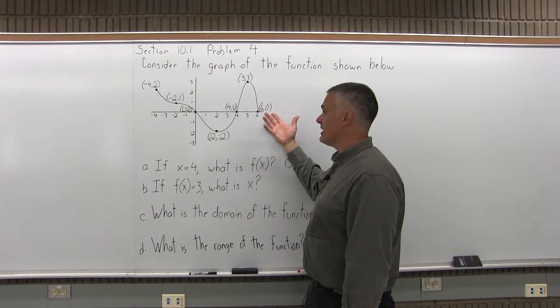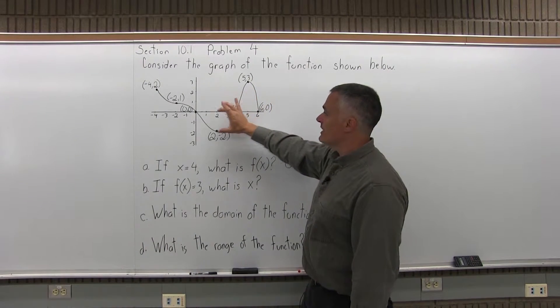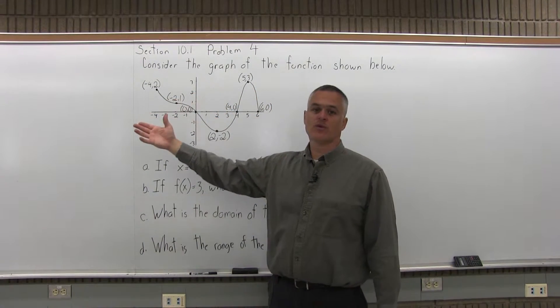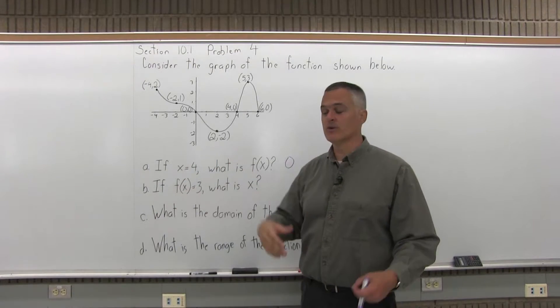The x values are what you're choosing to put in, and the height that you go up or down to get to the graph is what the function is giving you as an output, what you get out.